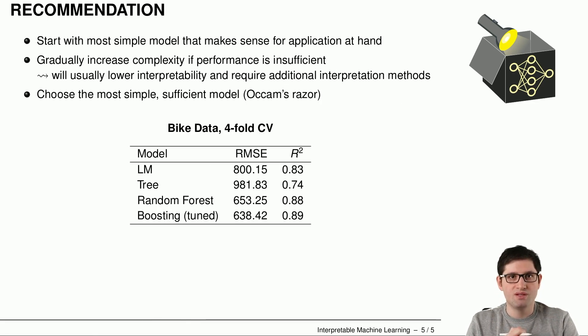So let's conclude this session with some recommendations. Usually you should start with the simplest model which can be a linear regression model, a decision tree, a model that is interpretable and simple enough and makes sense for your application at hand. You should always check the performance of course and see if this performance is sufficient for your use case. If not, you can gradually increase the complexity either by keeping this interpretable model and do this feature engineering or by trying out some complex machine learning models and compare the performance.